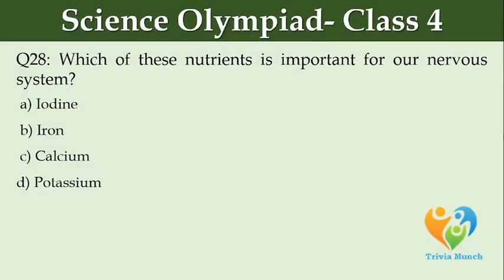Which nutrition is important for our nervous system? Option A: iodine. Option B: iron. Option C: calcium. Option D: potassium.